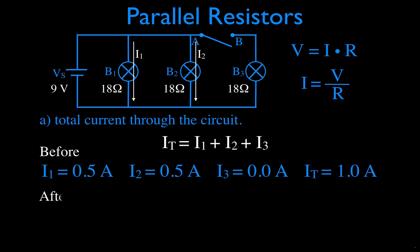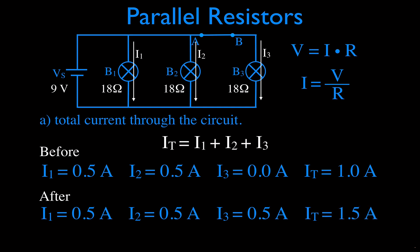Now we close the switch. After closing the switch, we get current through bulb three, but the currents through one and two remain the same because they're in parallel with the voltage. The current through I3 is 0.5 amperes — the same voltage, the same resistance. Adding them up, the total current after closing the switch is 1.5 amperes. So we can see that the total current increases.